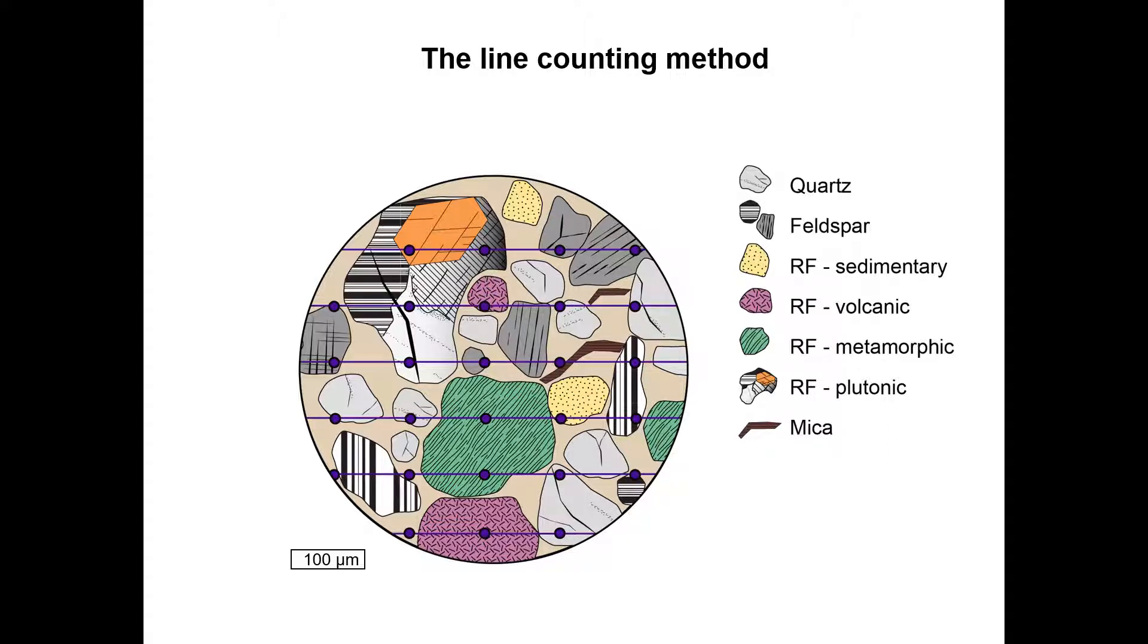This method can be susceptible to grain size bias because larger grains like this one can be counted multiple times whereas smaller grains might not be counted at all.